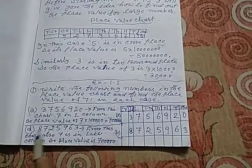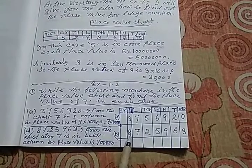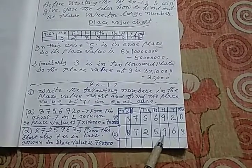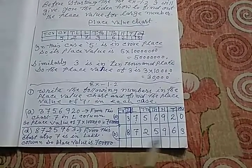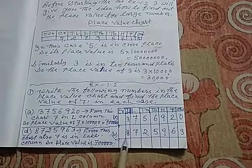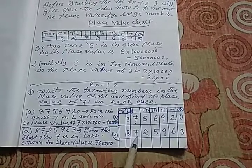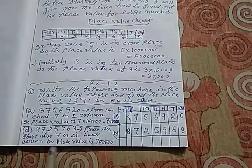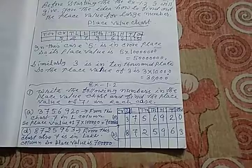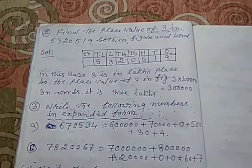7 is in lakhs place. That is why it is multiplied by 1 lakh and the place value of 7, in this case, 7 lakhs. Similarly, this number is put in the column, different columns. Here, 7 is also in the lakhs column. So its place value will be 7 lakhs. In this case, now in second number.